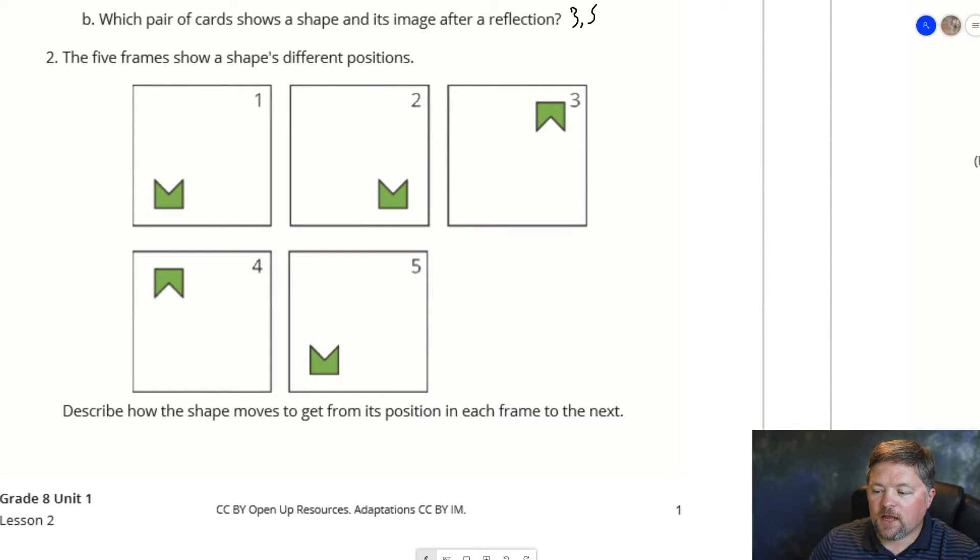The 5 frames show a shape's different positions. Describe how the shape moves to get from its position in each frame to the next frame. 1 to 2: It just moved that way. That is a translation.